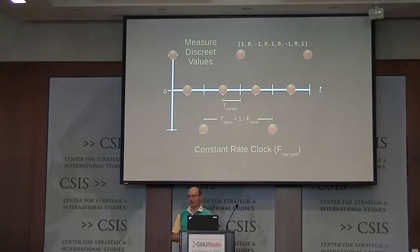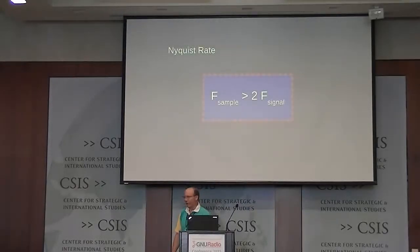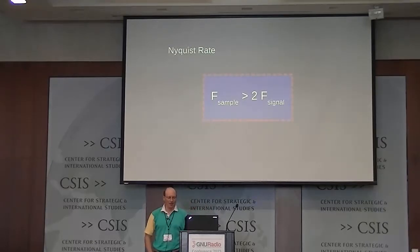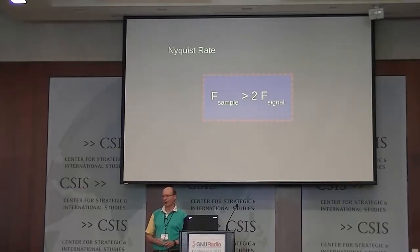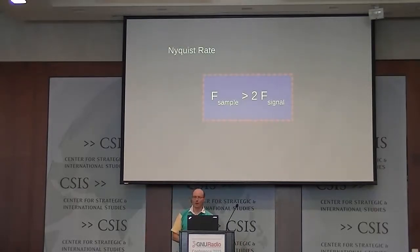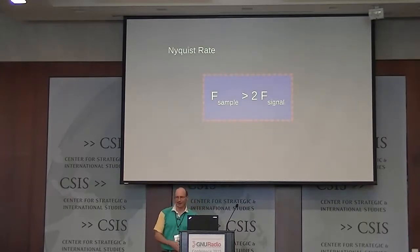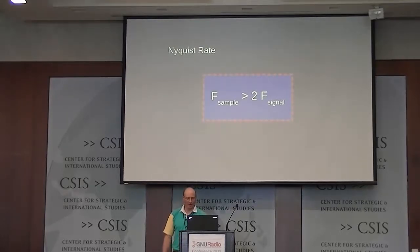You'll hear about the Nyquist rate a lot. It's stated as more of a specific rule than it really is. A lot of times people think that if you sample a signal at two times the frequency of the signal, then you can represent it perfectly. That's not really it — you should read it backwards. If you are sampling at a certain frequency, there's no way you can represent any signal that has a frequency higher than half that frequency. That's probably a better way of thinking about it.